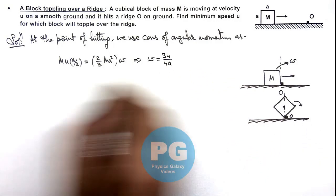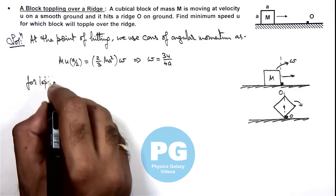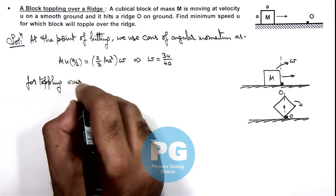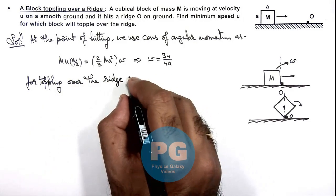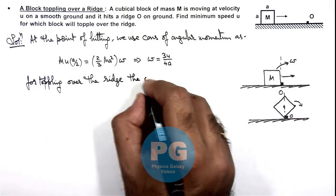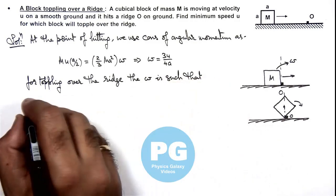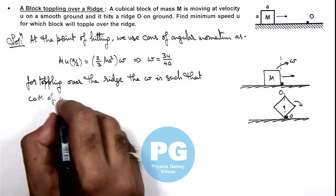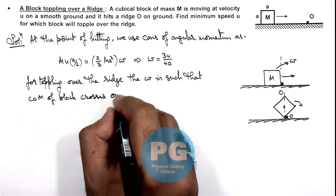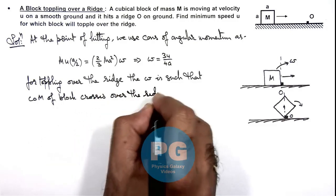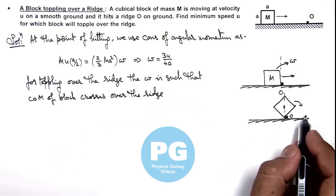And we can write, for toppling over the ridge, the omega is such that center of mass of block crosses over the ridge, so that the weight of gravity will support in toppling and then it'll fall over the ridge.